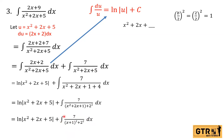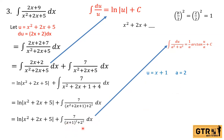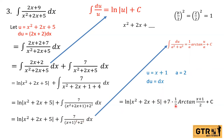Now for this part we will use the formula for arctangent. The formula is: the integral of du over (a² + u²) = (1/a) arctan(u/a) + C. Our u here is (x + 1) and our a = 2. The differential du = dx. So the integral of 7 over [(x+1)² + 2²] gives us 7 × (1/2) × arctan((x+1)/2) + C, which simplifies to (7/2) arctan((x+1)/2) + C.